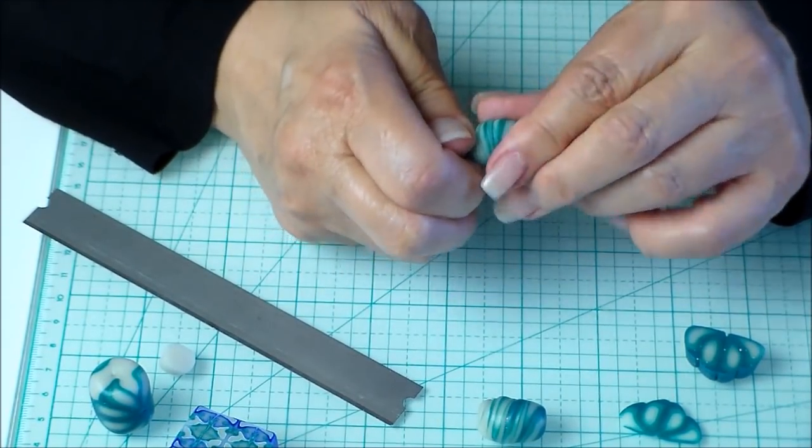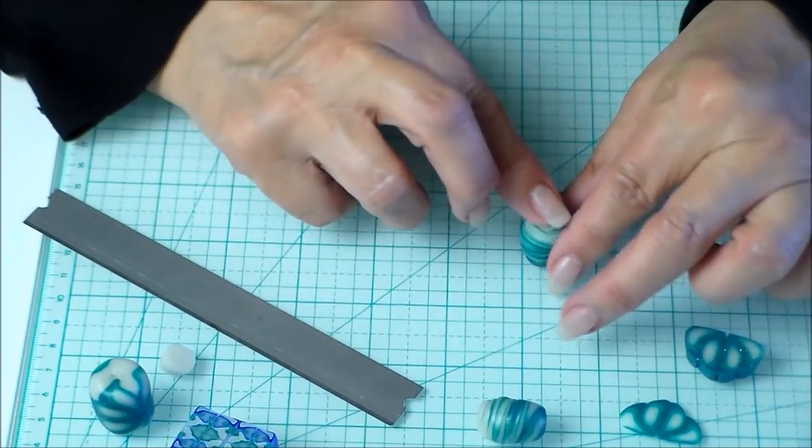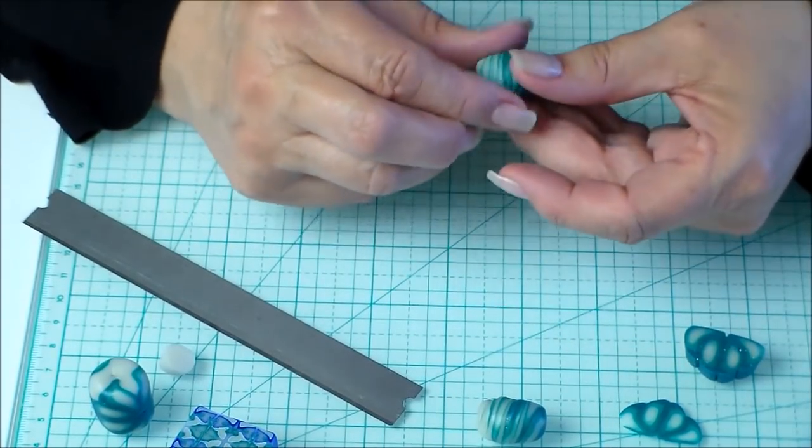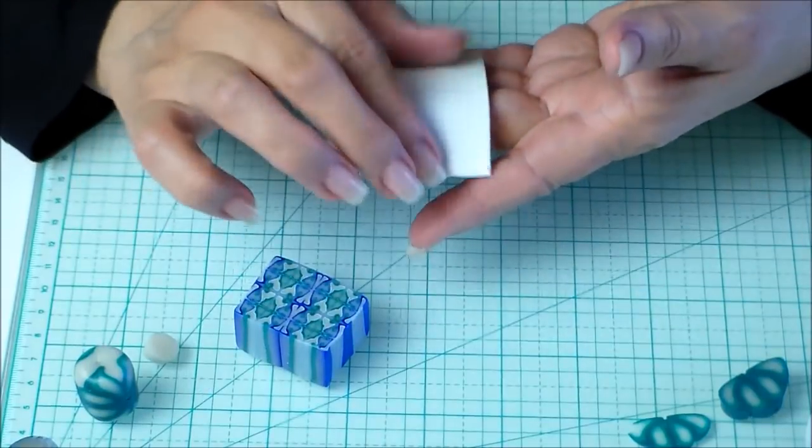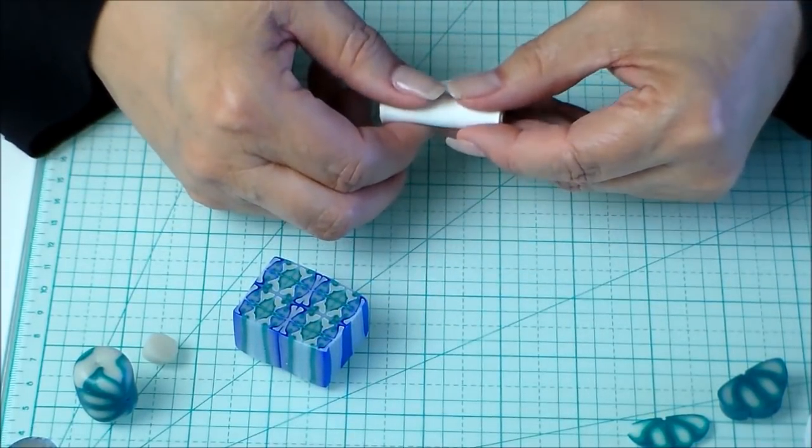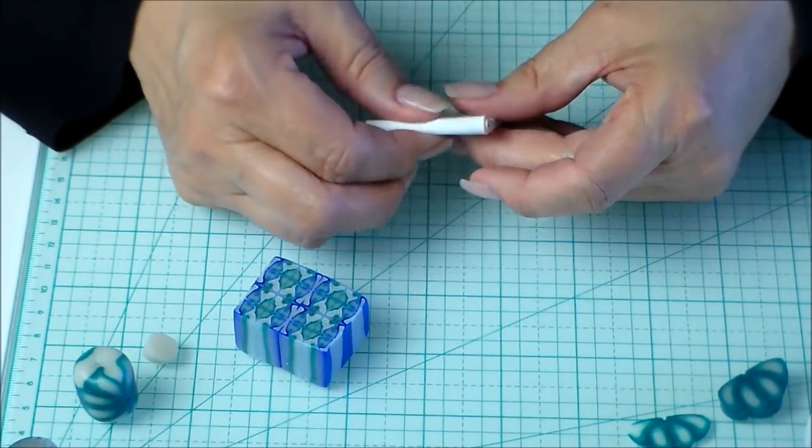So I'm leaving them kind of twisty with some texture to them. You can smooth it out if you want to, that's kind of a different looking bead than what we're making. I'm making these kind of faux lampwork glassy kind of looking ones.